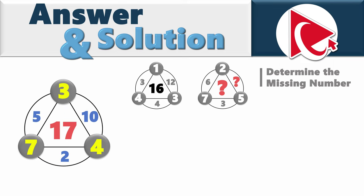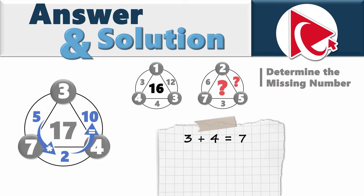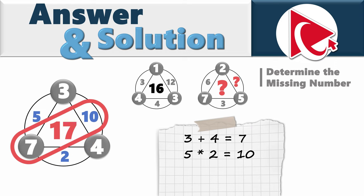Outside numbers form a clockwise addition expression with the result at 8 o'clock. Inside numbers form a multiplication expression with the result at 2 o'clock. The middle number is the sum of results of both calculations. For example, in the small circles, 3 plus 4 equals 7. Inside the larger circle, 5 multiplied by 2 equals 10 — moving counterclockwise. Then 7 plus 10 equals 17, the middle number.